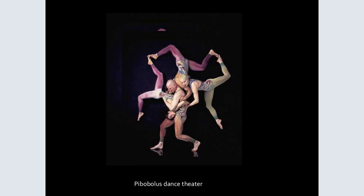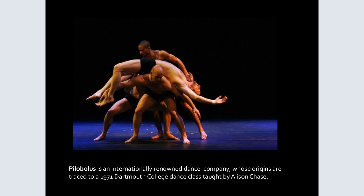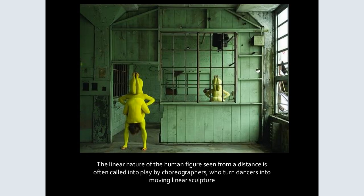We may not want to think about dancers as being the use of line, but look at the body — it's just one sort of line. This is a Seattle theater company that takes human bodies, stacks them, and creates all different shapes. The linear nature of human figures seen from a distance is often called into play by choreographers who turn dances into moving linear sculptures.